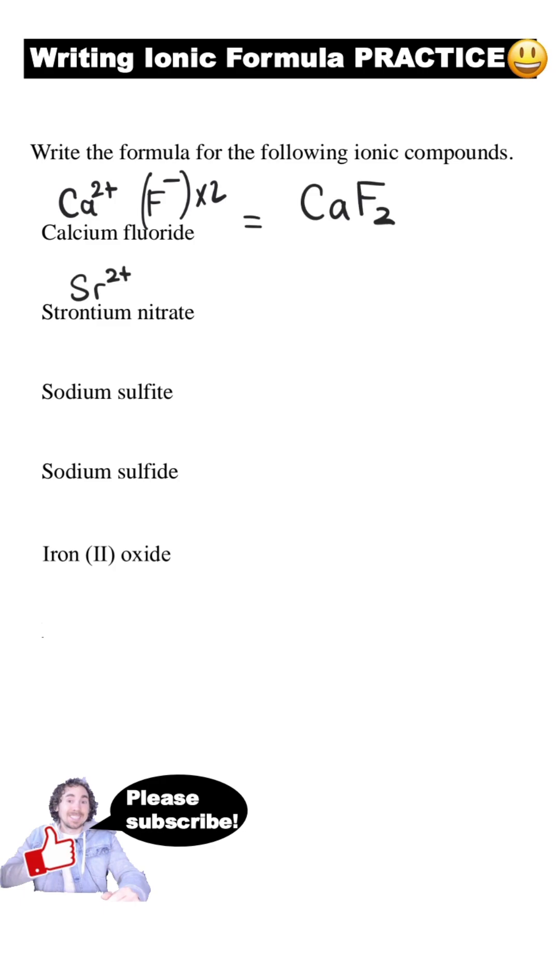Strontium forms a two positive ion, and nitrate is a polyatomic ion. Nitrate is NO3 with a negative charge. That means it's the whole group of that one nitrogen and three oxygens that has a negative one charge. Since we'll need a two negative charge to balance the charge of the strontium, we have to add a whole other nitrate ion. When you have more than one polyatomic ion, you put it into parentheses, and you put the number on the outside like this.